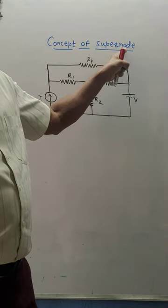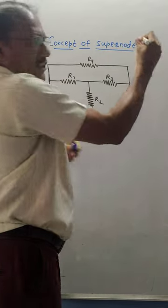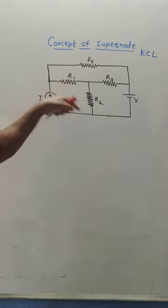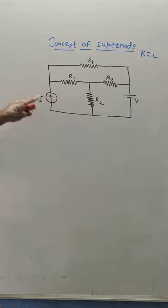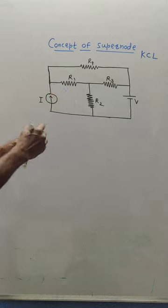We'll discuss the concept of super node. It is applicable for KCL, that is Kirchhoff's current law. I've shown the circuit in which there are two sources: a current source of value I and a voltage source of value V. Now, the first thing you need to do is identify how many nodes are there.